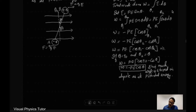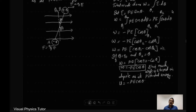This formula W equals minus PE cos θ can now be simply rewritten as U equals minus PE cos θ. In vector form, we can write U equals minus p-vector dot E-vector.